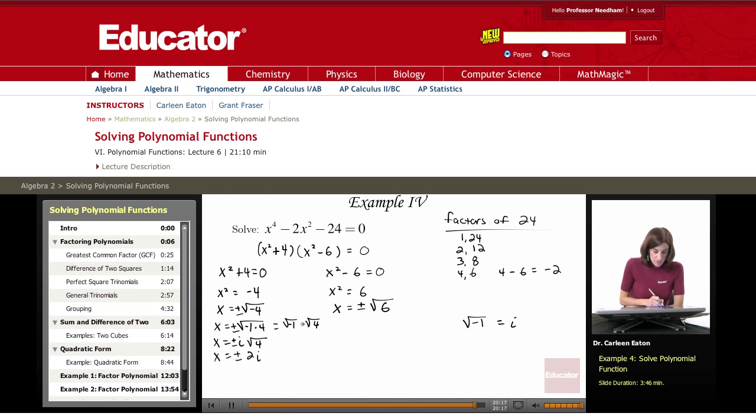All right, so I was asked to solve this, and I came up with the solutions. The solutions are that x equals 2i, negative 2i, the square root of 6, or the negative square root of 6. I figured that out by factoring this into these two factors: x squared plus 4 times x squared minus 6.